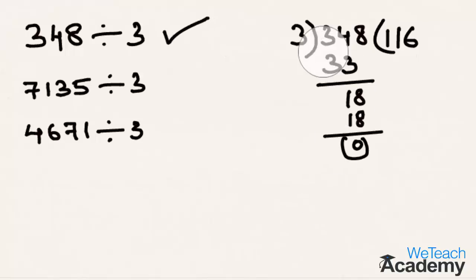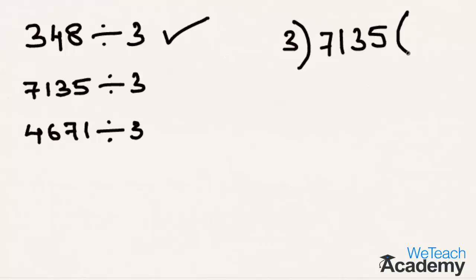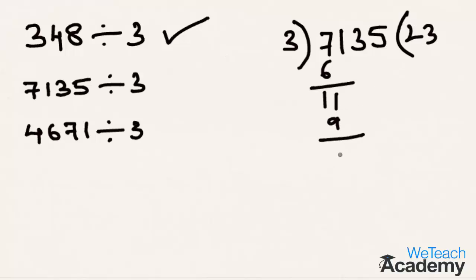Now let us go for the second example — let us divide the number 7135 by 3. So 3 times 2 is 6, and 7 minus 6 is 1. Bringing down 1 we get 11. 3 times 3 is 9, and 11 minus 9 is 2. Bringing down the next digit, that is 3, we get 23.